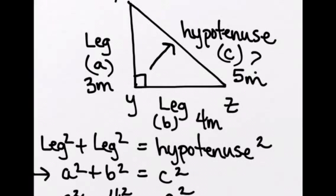And this is a very popular right triangle that's used in construction. It's called the three, four, five right triangle.